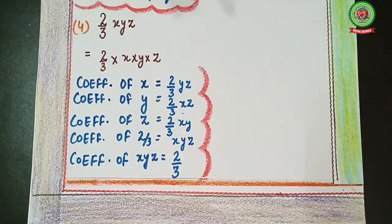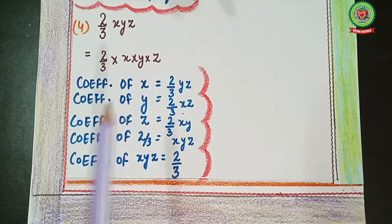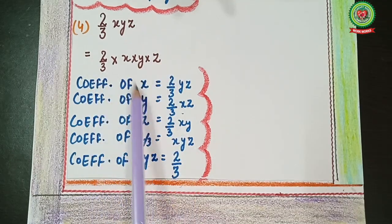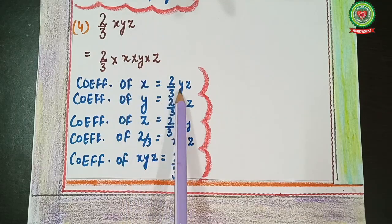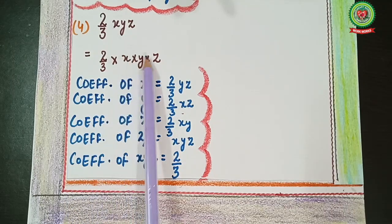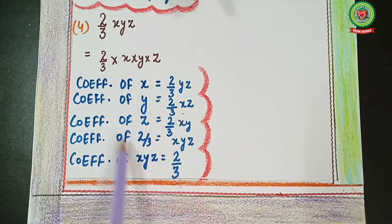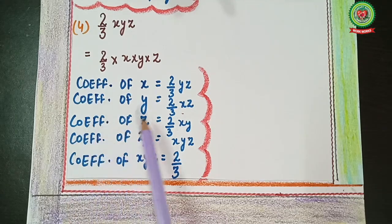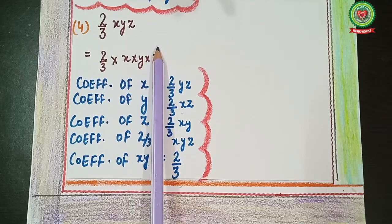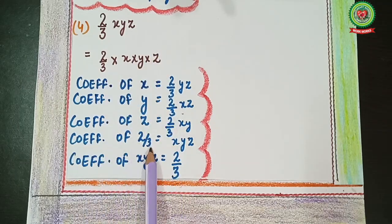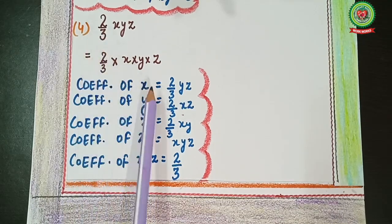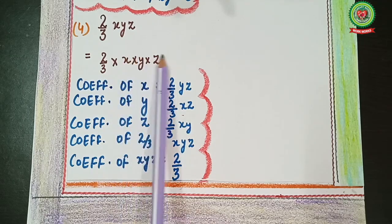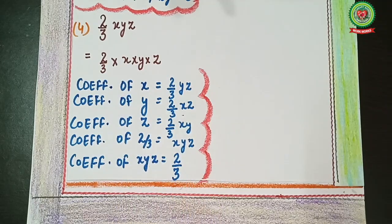Last example: (2/3)xyz. Factorize as (2/3) × x × y × z. Coefficient of x: hide x, left is (2/3)yz. Coefficient of y: hide y, left is (2/3)xz. Coefficient of z: hide z, left is (2/3)xy. Coefficient of (2/3): hide (2/3), left is xyz. Coefficient of xyz: hide x, y, z — left is 2/3.